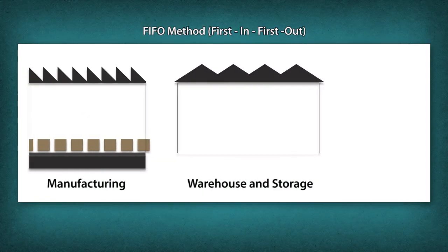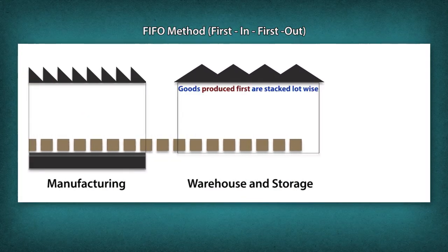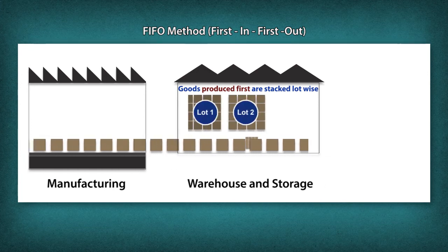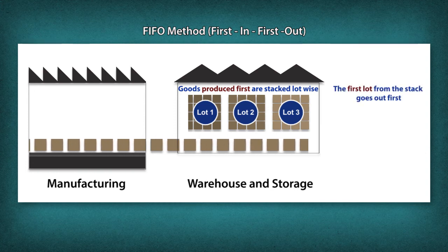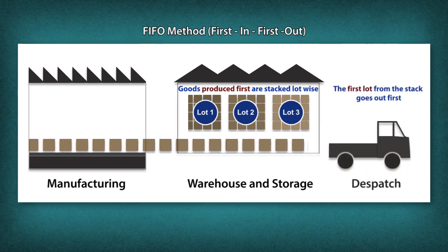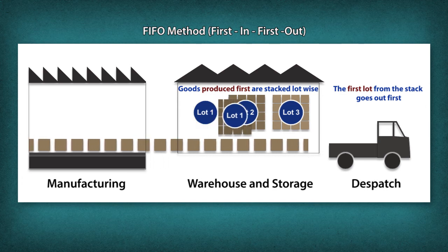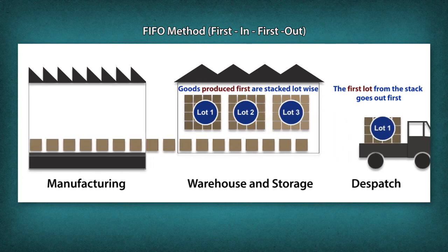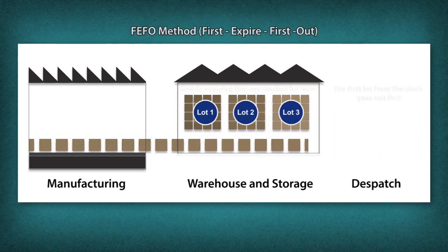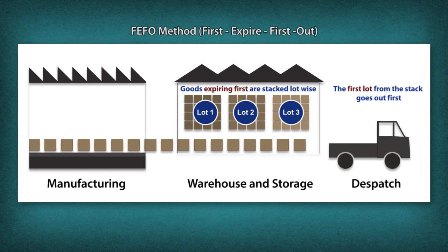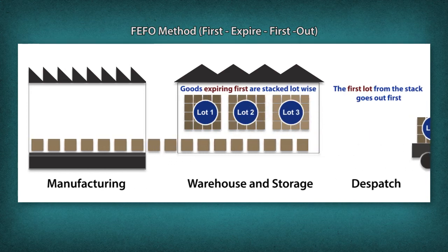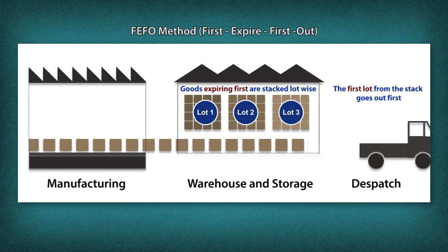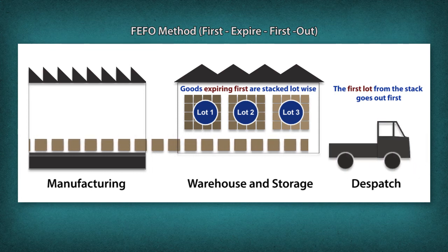FIFO (First In First Out) is a stock rotation system that dispatches processed food depending on the order in which it is produced. FEFO (First Expired First Out) is a stock rotation system wherein products that need to be consumed earlier are shipped first.